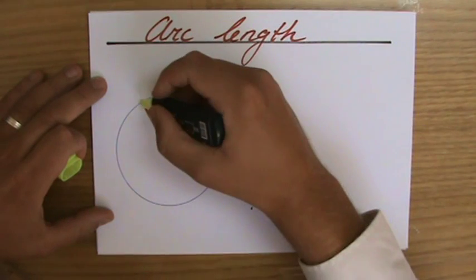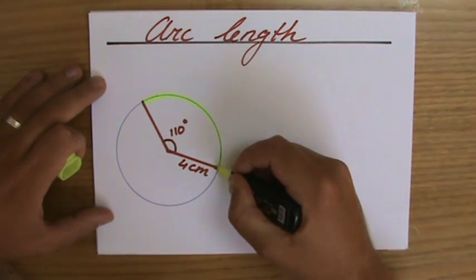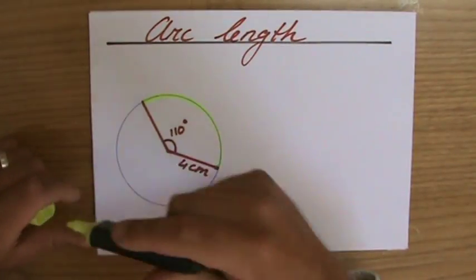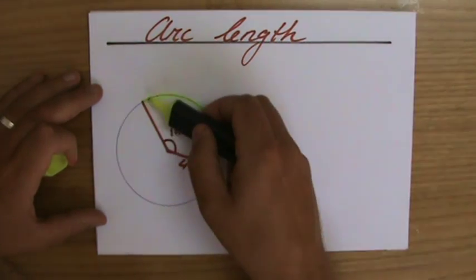So that's a radius, another radius, and the arc length is the length of that part of the circumference, and that is actually also what we can call the minor arc, where if you would be talking about the major arc, that would be the bigger side of the two.